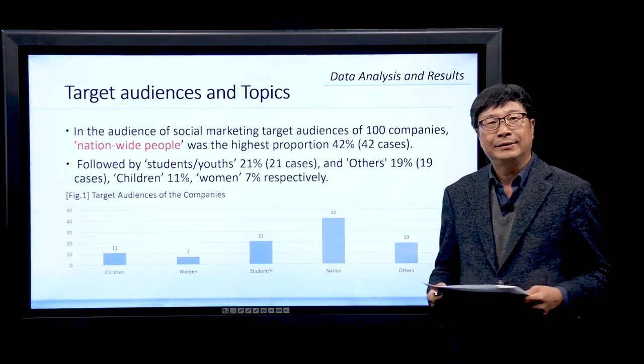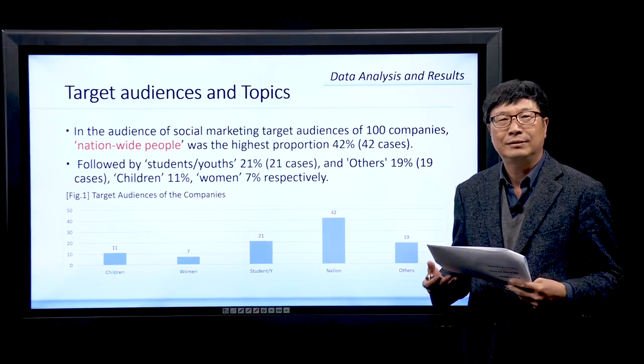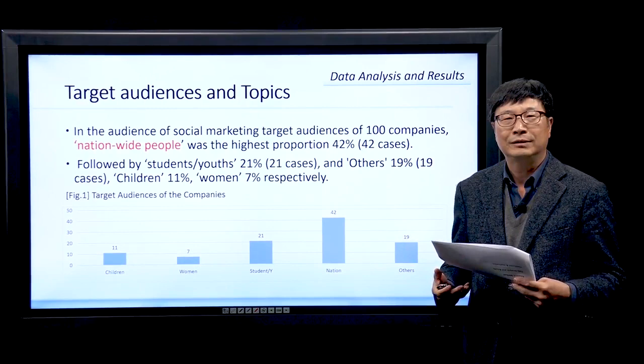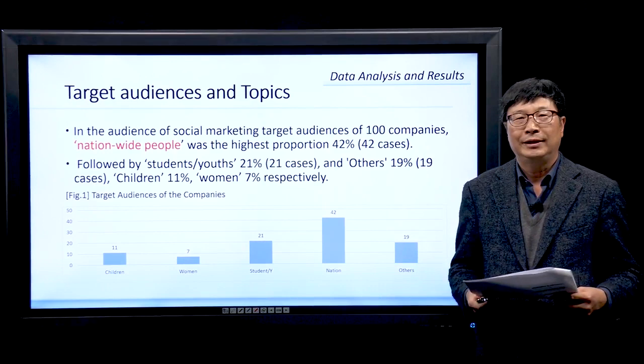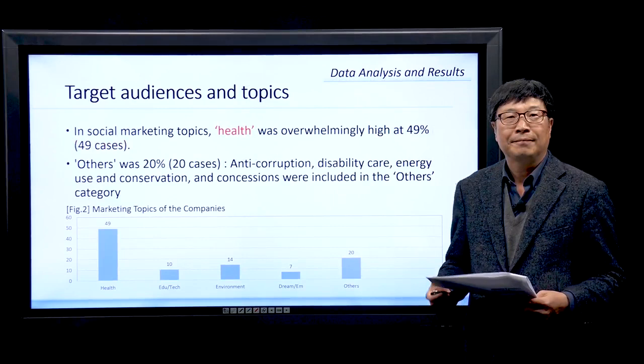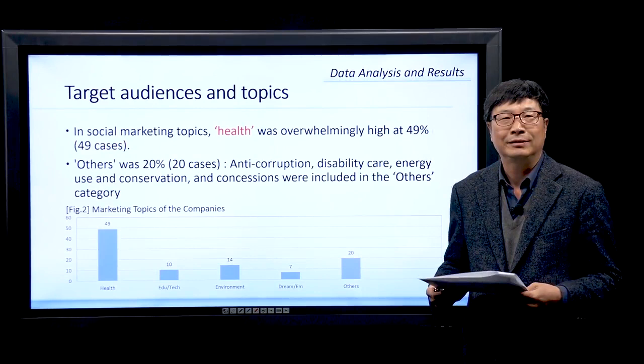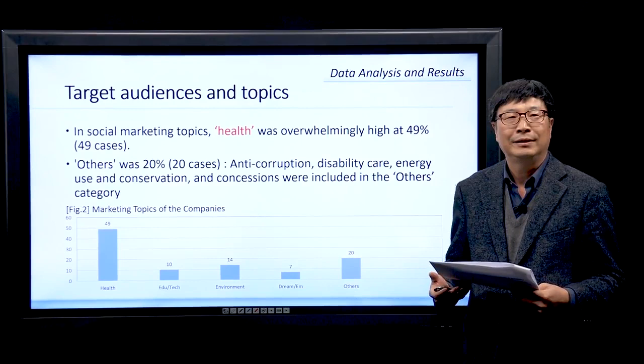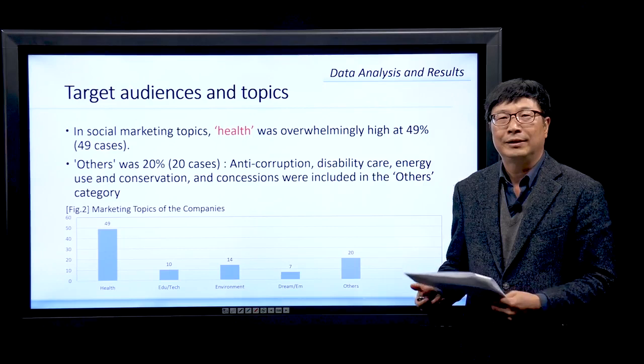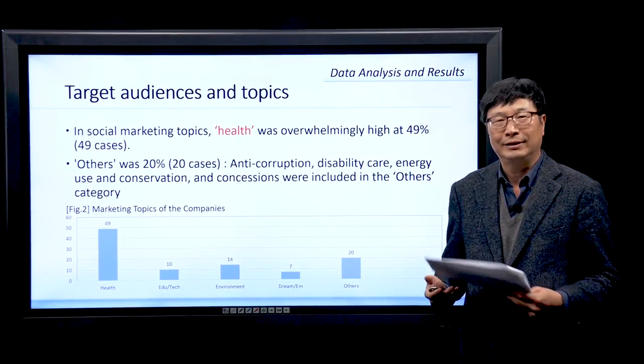The main target audience of social marketing was nationwide people, with 42 cases. The next groups were students and youth, followed by others, children, and women. Regarding the topic of marketing, the main topic was health with 49 cases. The next categories were others, such as anti-corruption, desirable care, energy use and conservation, and others.